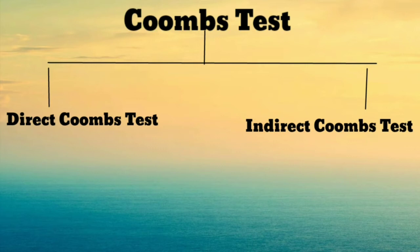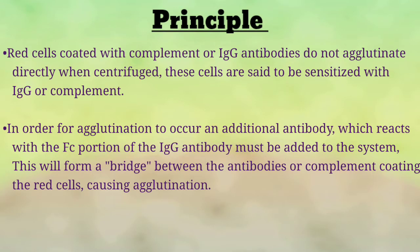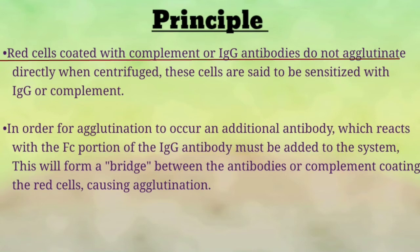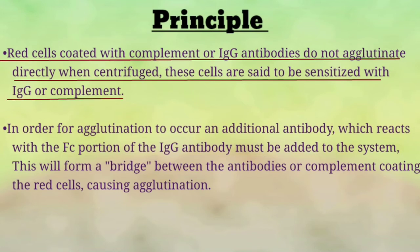Coombs tests are divided into two different tests: first is the direct Coombs test, and second is the indirect Coombs test. The principle of the Coombs test — I am telling it first because in both tests, direct as well as indirect, the principle is the same. Red cells coated with complement or IgG antibodies do not agglutinate directly when centrifuged; these cells are said to be sensitized with IgG or complement.